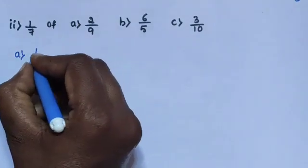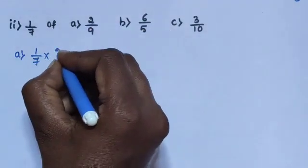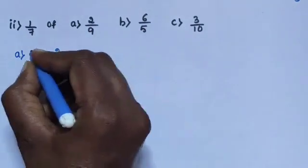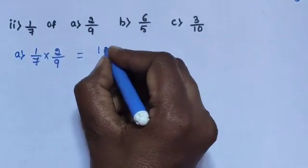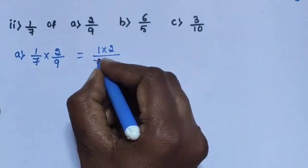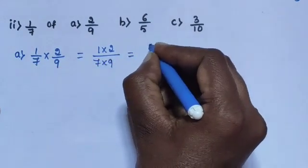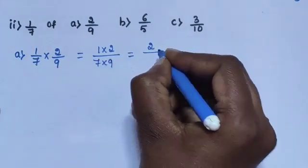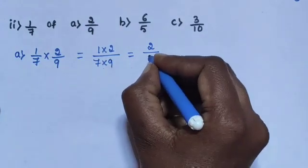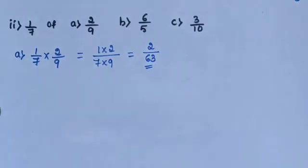Question A: 1/7 multiplied by 2/9 equals 1×2 divided by 7×9. 1 twos are 2, 7 nines are 63. The answer is 2/63.